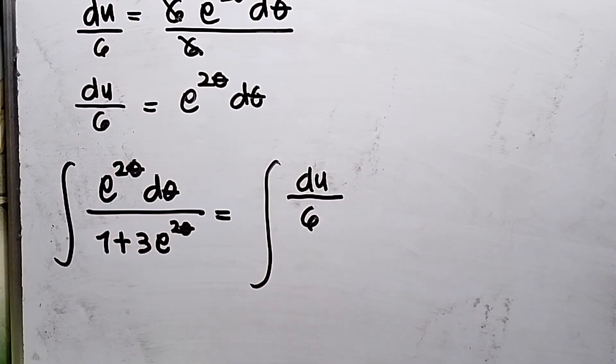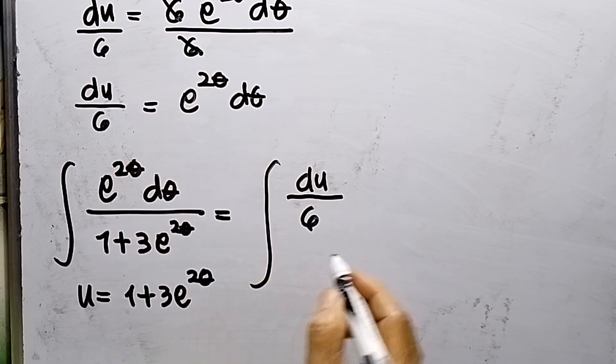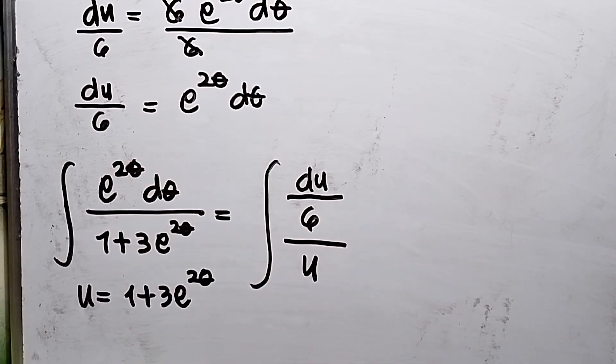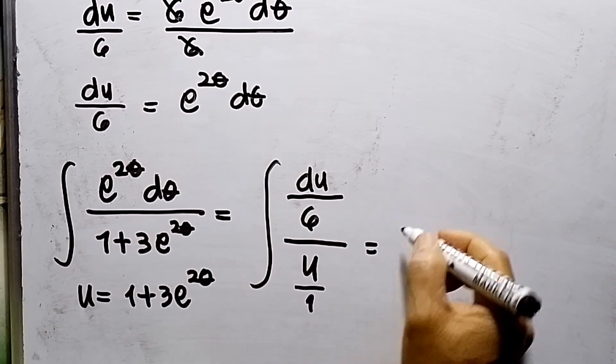This is our u, 1 plus 3e to 2θ, so this will be u. And then I need to write the simplest form, so this will be over 1. So this will be integral of du over...